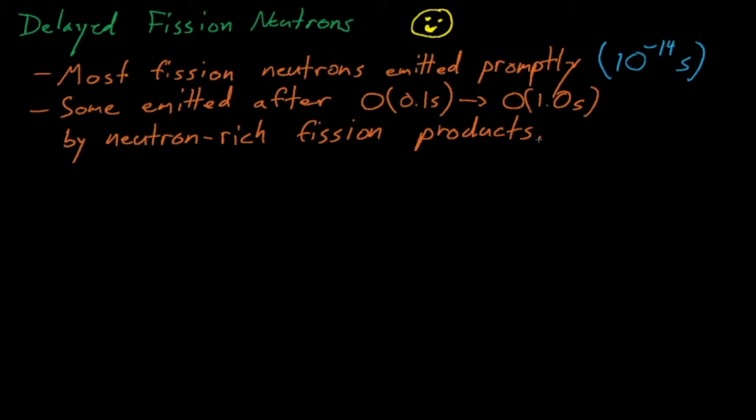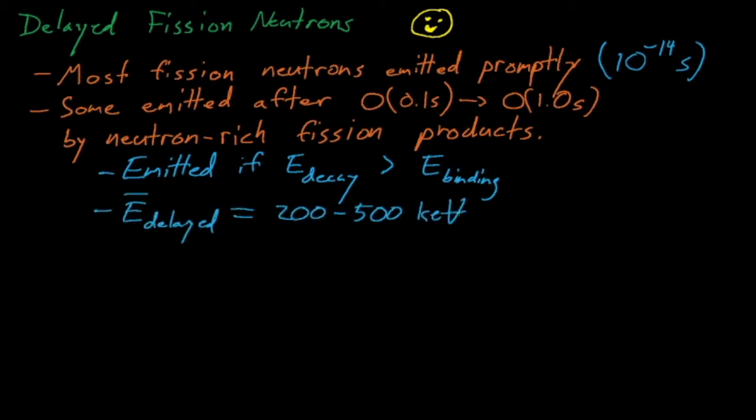These fission products tend to have way more neutrons than they would like to have to become stable, so when they undergo radioactive decay to approach stability, sometimes neutrons will absorb the energy of the decay and will be expelled from the nucleus entirely. These neutrons can be emitted if the energy of the radioactive decay is greater than the binding energy of these neutrons. When these neutrons are emitted, they tend to have energies in the 200 to 500 keV range, which actually makes it easier for them to thermalize compared to prompt fission neutrons, which are generally in the 1 to 2 plus MeV range. So as we'll see and discuss later, these delayed neutrons are actually more important, we'll discuss importance later, than the prompt fission neutrons because they're closer to thermal energies.